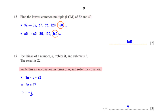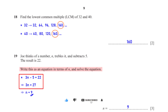Write an equation in terms of n and solve it. Joe thinks of a number n, trebles it, and subtracts 5; the result is 22. So we have 3n − 5 = 22. Adding 5 to both sides gives 3n = 27, and dividing both sides by 3 gives n = 9.